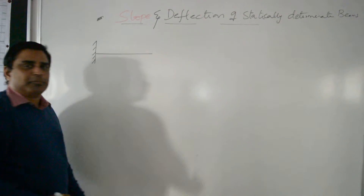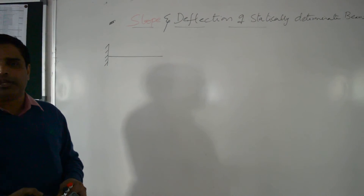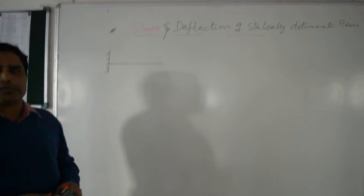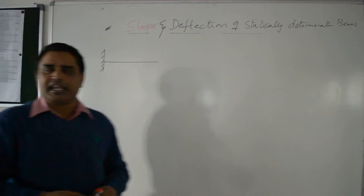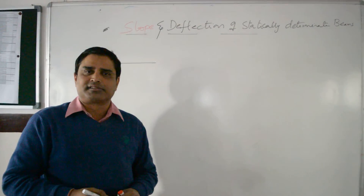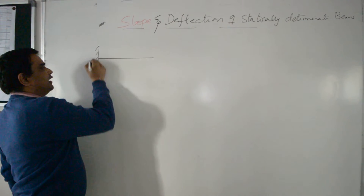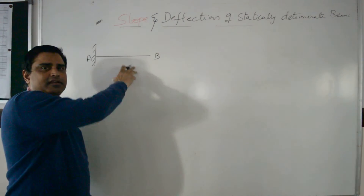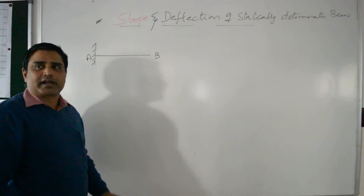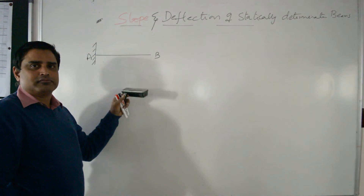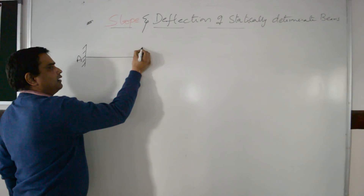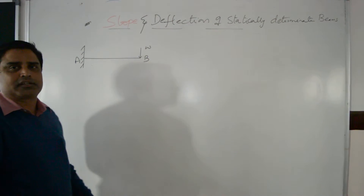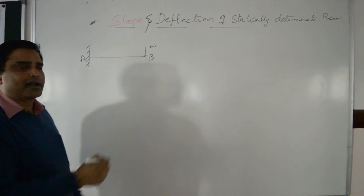A cantilever beam has one side fixed and the other end is free. This beam is analyzed using only three equilibrium conditions. The beam is initially straight with no load acting on it, and when load is applied at the free end, the beam deflects in a circular arc shape.